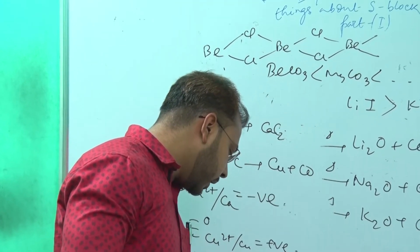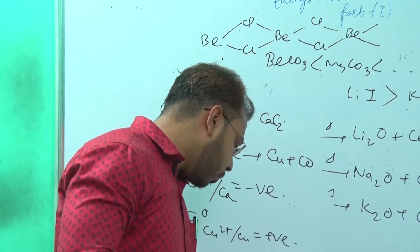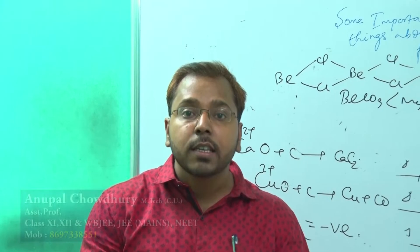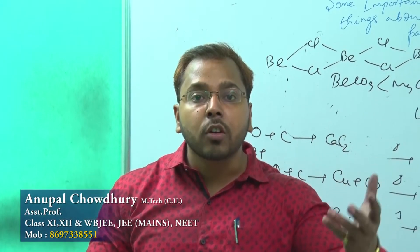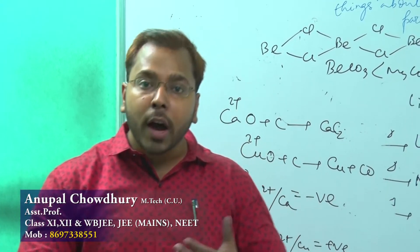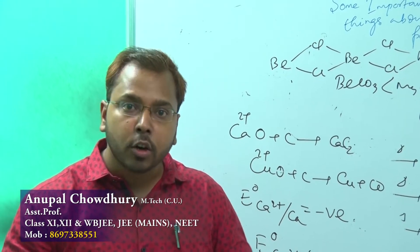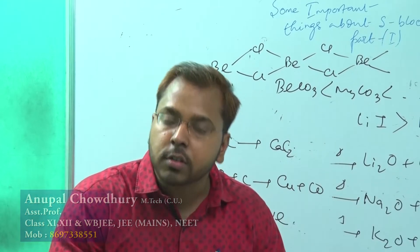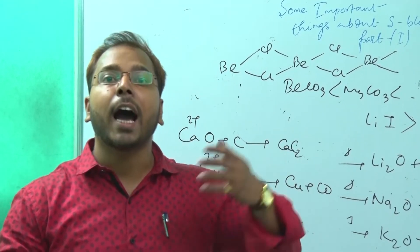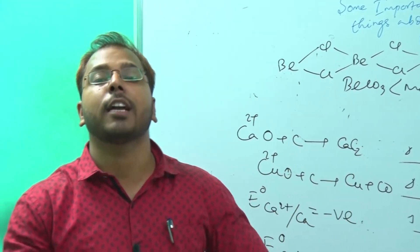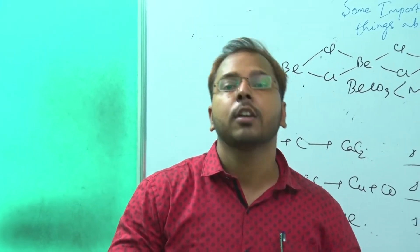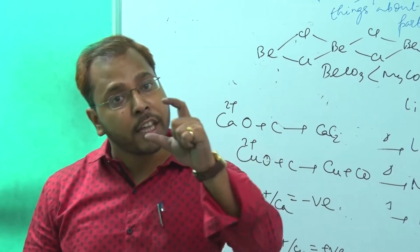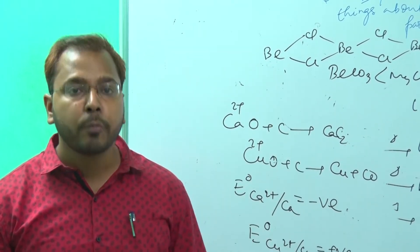Why are alkali metals good reducing agents? Because they can easily remove their electrons due to low ionization energy. They have a strong tendency to get oxidized, which means they reduce other substances. Therefore, Group 1 elements are very good reducing agents, better than Group 2 elements.